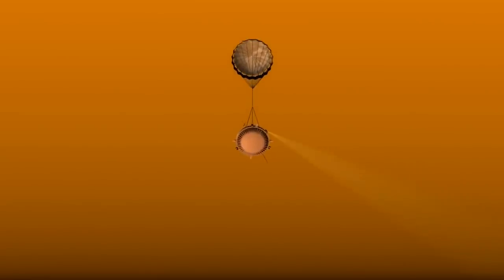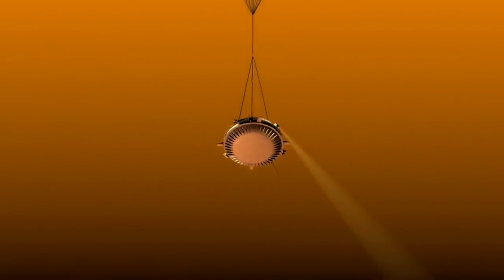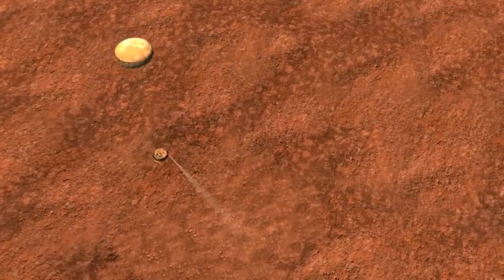Although no lakes or oceans were seen from Huygens' images, it appears to have landed in a dried up lake bed.